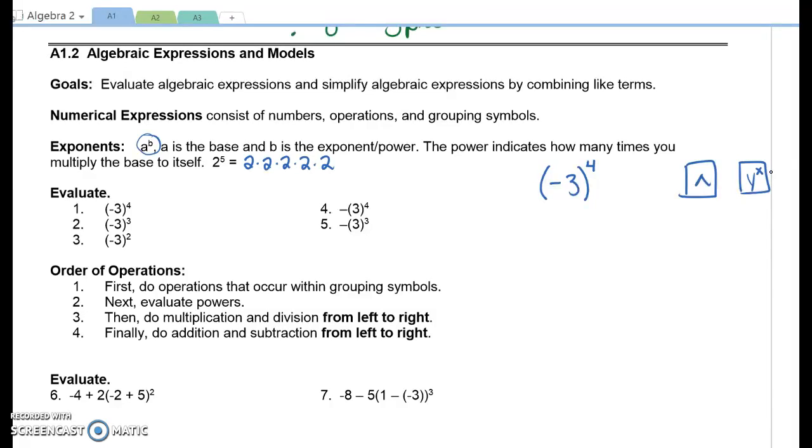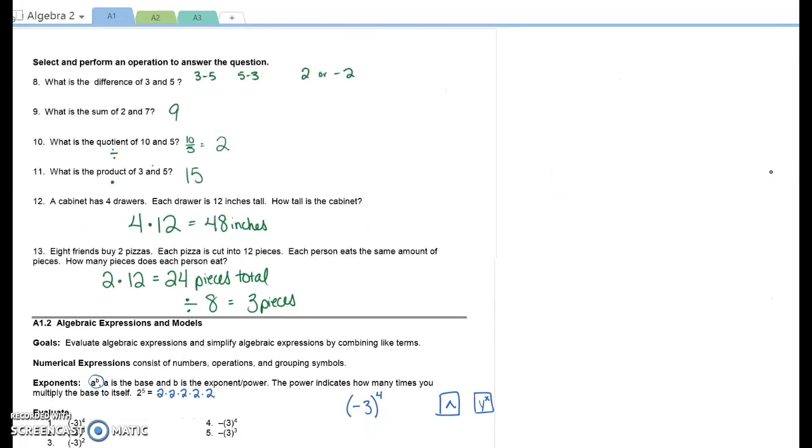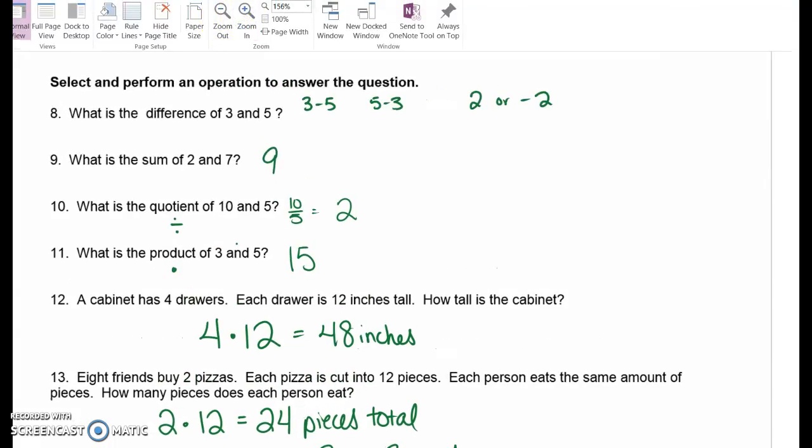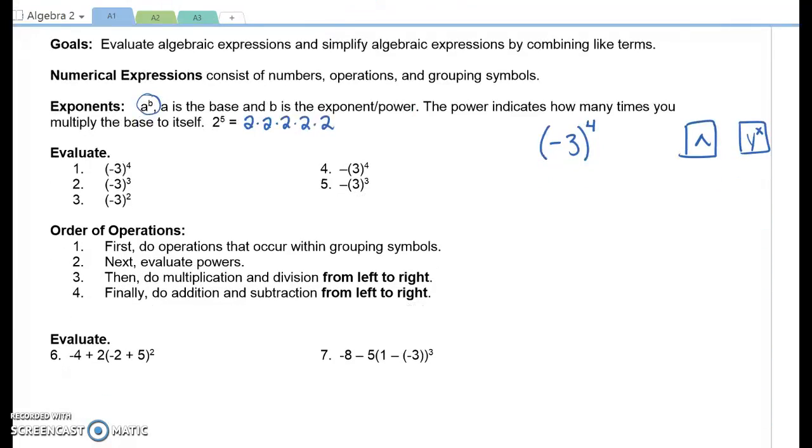Negative 3 to the 4th means negative 3 times negative 3 times negative 3 times negative 3. Should your answer be positive or negative? Positive because we have an even number of negatives. So this should give you 81 in your calculator.